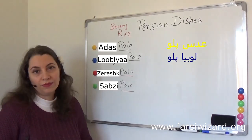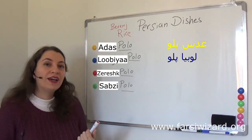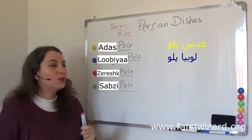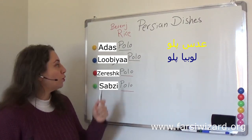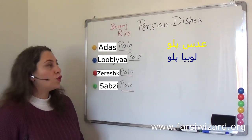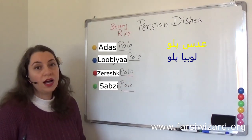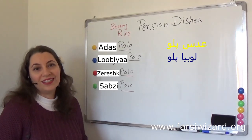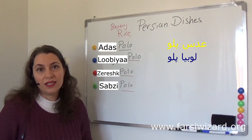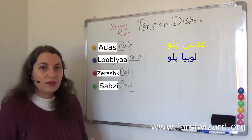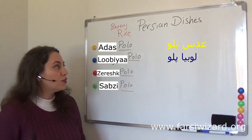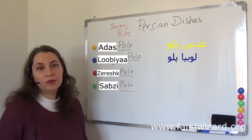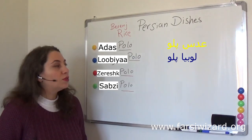Next is lubia. What is lubia? In some languages you will notice a similar word — for example, in Spanish we have alubias. So lubia is beans. In this context, it strictly refers to string beans or green beans. The Iranian rice and beans dish is made with string beans. So lubia polo would be string beans and rice.